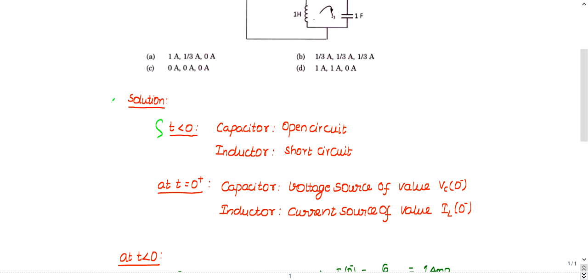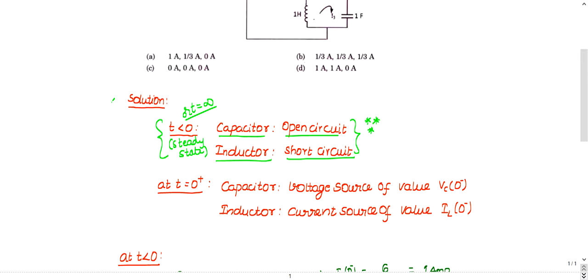Whenever it is a steady state — t less than 0 or t equal to infinity — both are steady states. At this case, if there is a capacitor, simply replace it with an open circuit. If there is an inductor, replace it with a short circuit. Remember: capacitor replaced with open circuit, inductor replaced with short circuit in steady state.